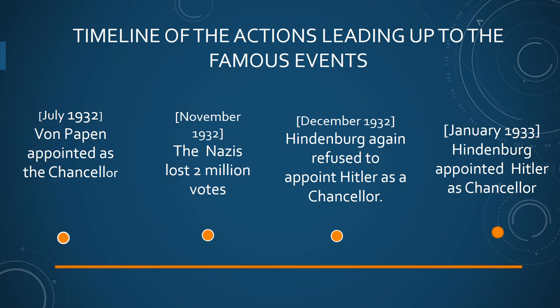In January 1933, Hindenburg appointed Hitler as Chancellor. Through January 1933, Hindenburg and von Papen met secretly with industrialists, army leaders, and politicians. On 30th January, to everyone's surprise, they offered Hitler the position of Chancellor. They were confident that they could limit Hitler's influence and resist his extremist demands. The idea was that policies would be made by the cabinet, which was filled with conservatives along with von Papen. Hitler would be there to get support in the Reichstag for those policies and to control the communists.